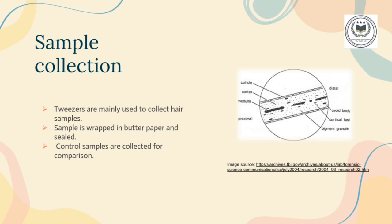An investigator can collect hairs they observe visually with tweezers or by hand. They can also use clear tape to lift non-visible hair from a variety of surfaces such as clothing. Other methods of hair sample collection include combing and clipping. Tweezers are mainly used to collect hair samples. Samples are wrapped in butter paper, and control samples are collected for comparison.